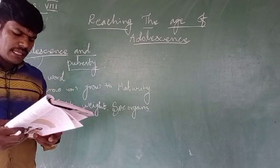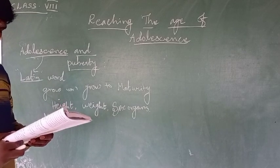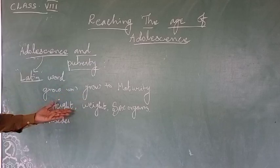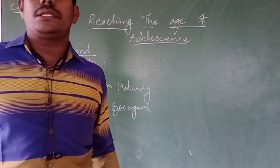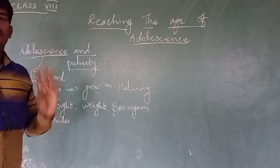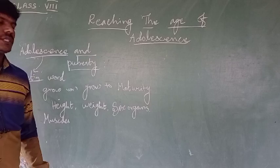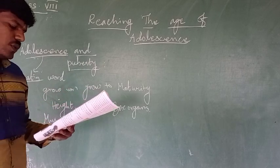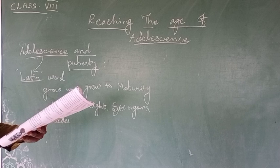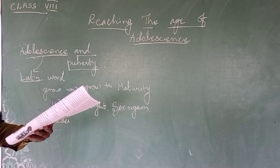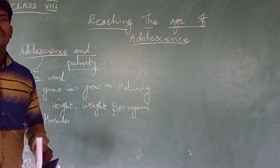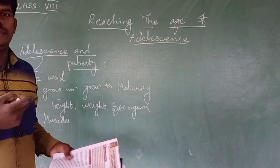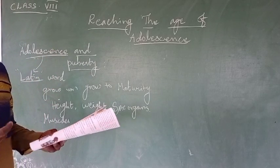Puberty is a period of a few years in which rapid physical and physiological changes occur resulting in sexual maturity. We can predict the sequence of physical changes that will take place, but the age of beginning of puberty varies from individual to individual.